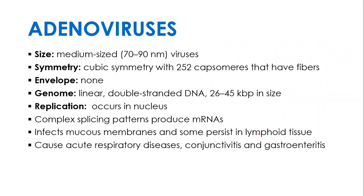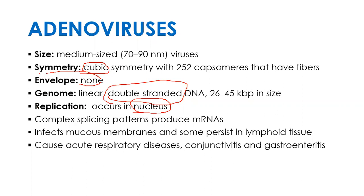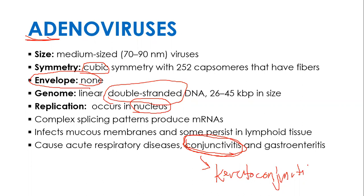For adenovirus: since nothing unique was mentioned compared to the general DNA virus characteristics, adenovirus is double-stranded, icosahedral or cubic symmetry, replicates within the nucleus, and is non-enveloped. The number one clinical association to know for adenovirus is that they cause conjunctivitis — specifically keratoconjunctivitis.